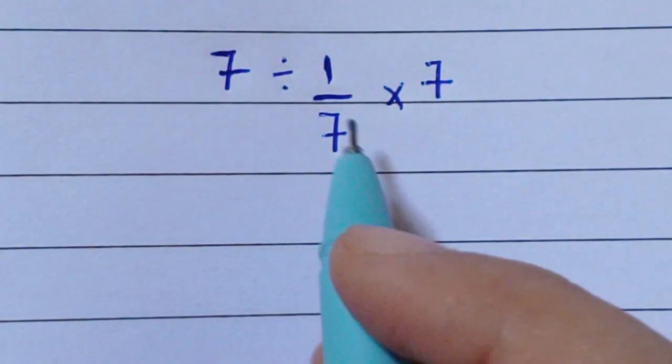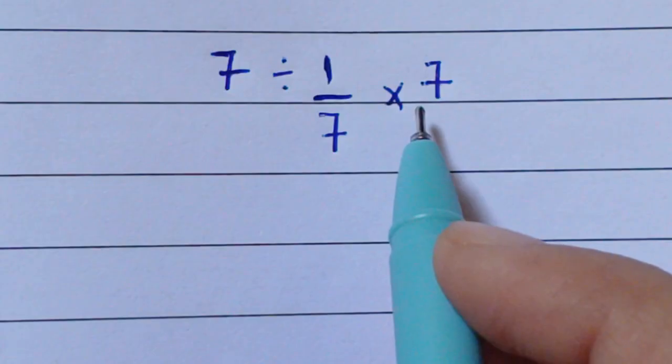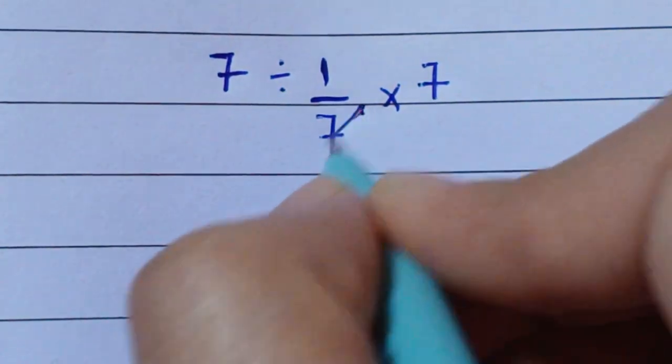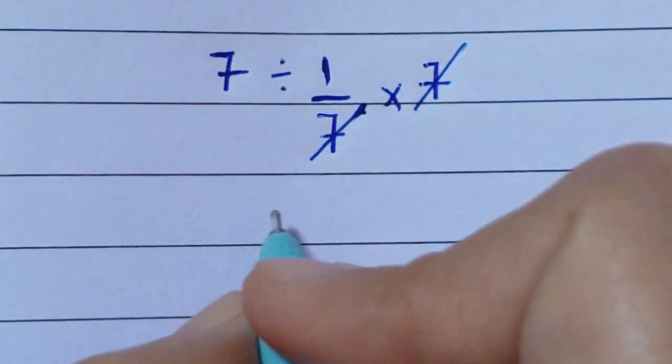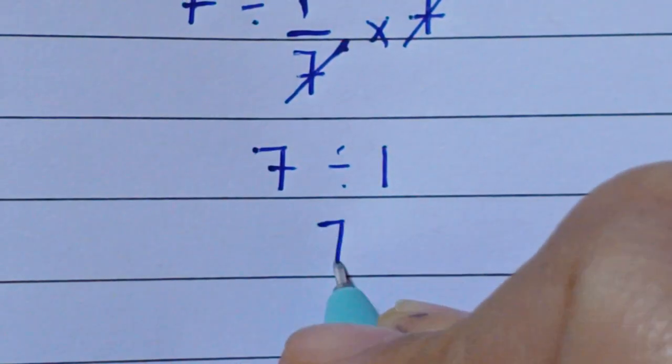Hello everyone, welcome back to my YouTube channel. Can you solve this math expression which is 7 divided by 1 over 7 times 7? So here 7 and 7 cancel, so here 7 divided by 1 which is 7. If you think the answer for this question is 7, then you are wrong.